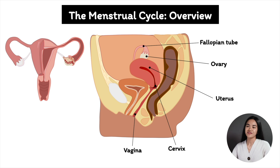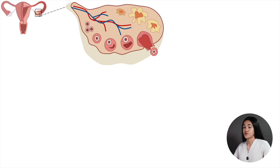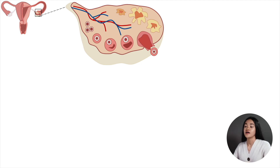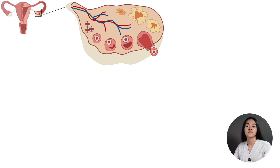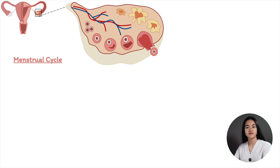Females of reproductive age, beginning from puberty until menopause, go through cycles of hormonal changes and activity in the ovaries and uterus every month. Each cycle lasts approximately 28 days, after which a new cycle begins, to prepare for a possible pregnancy. The overall cycle is referred to as the menstrual cycle, but it can be divided into the ovarian cycle and the uterine cycle.